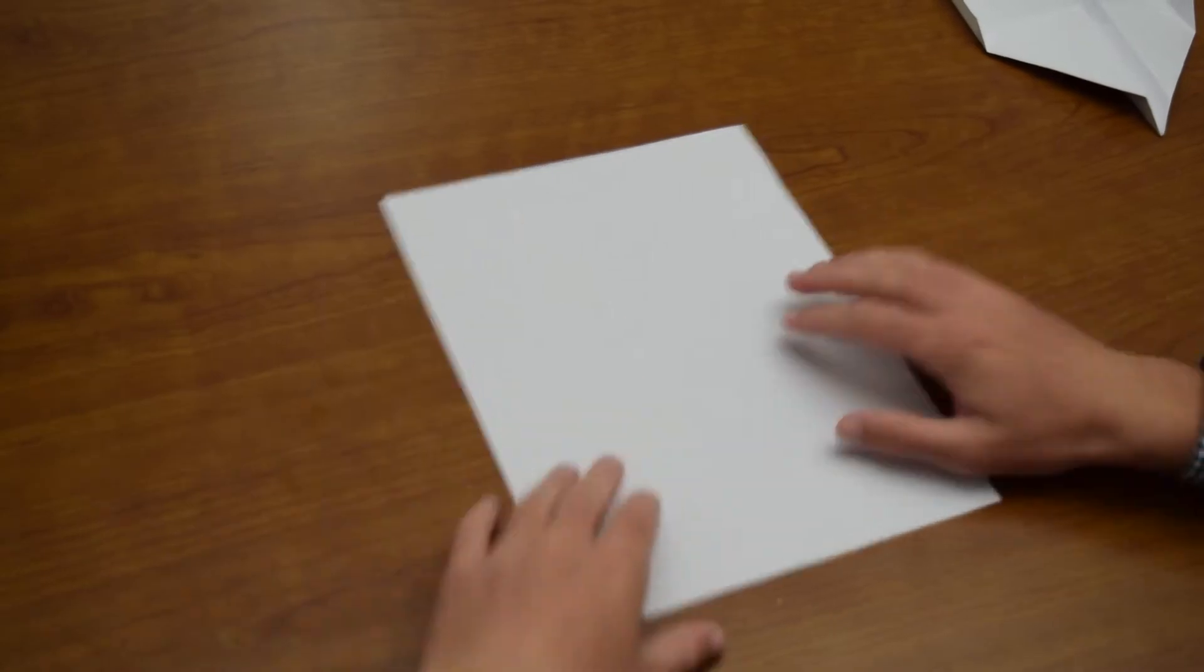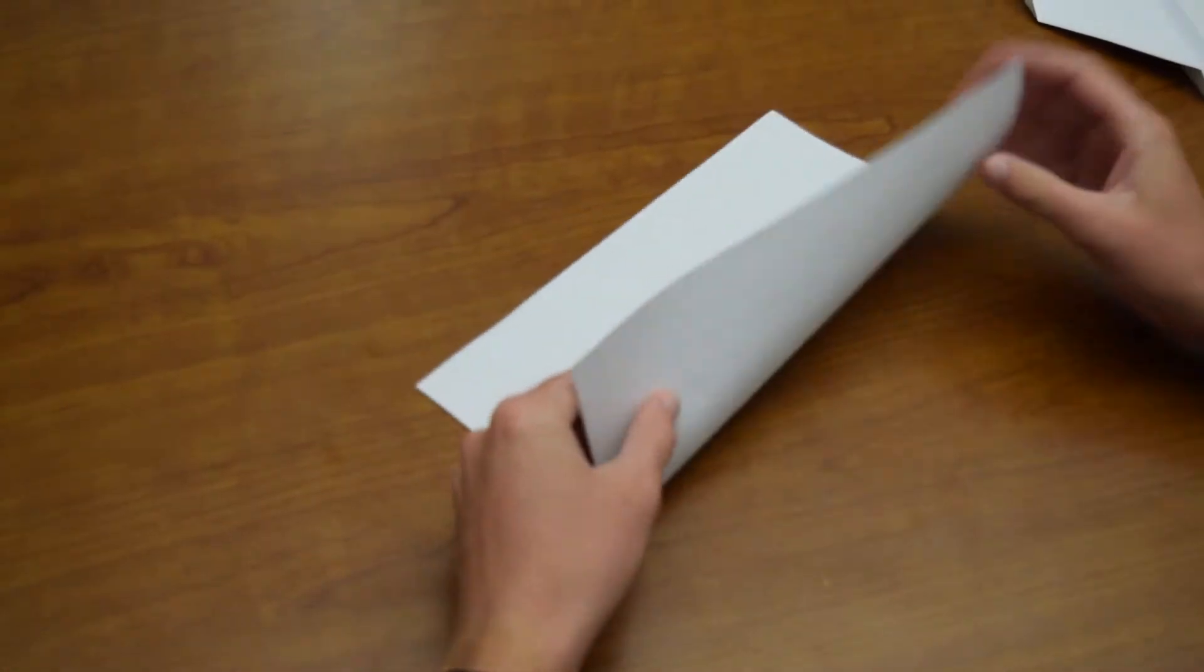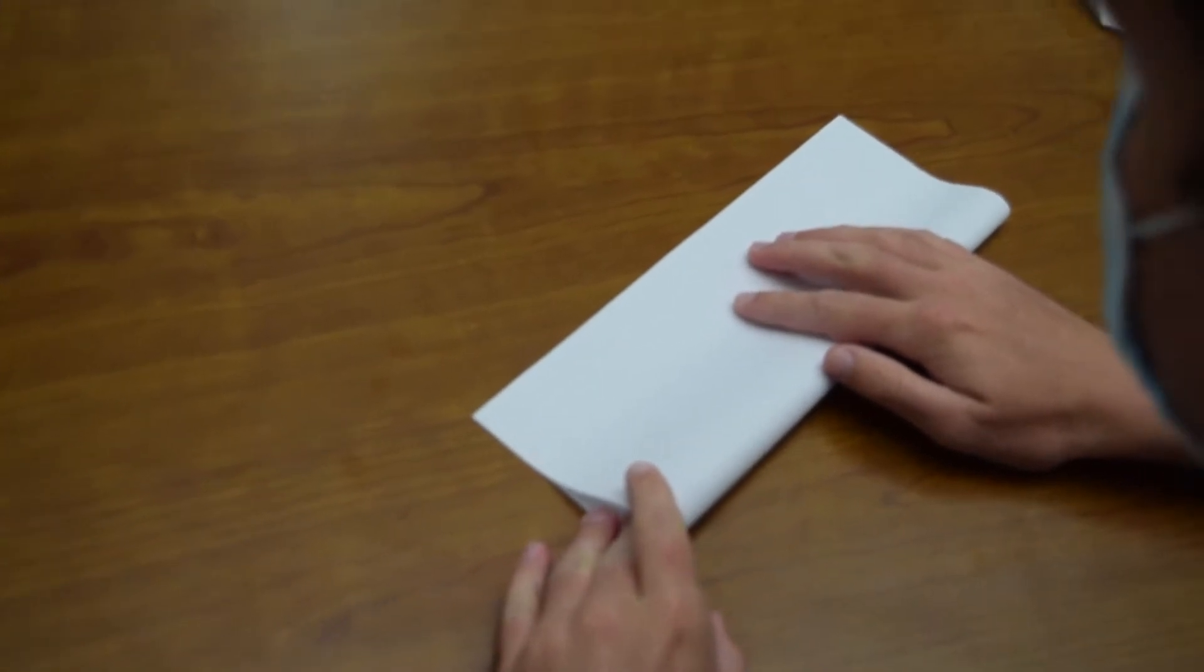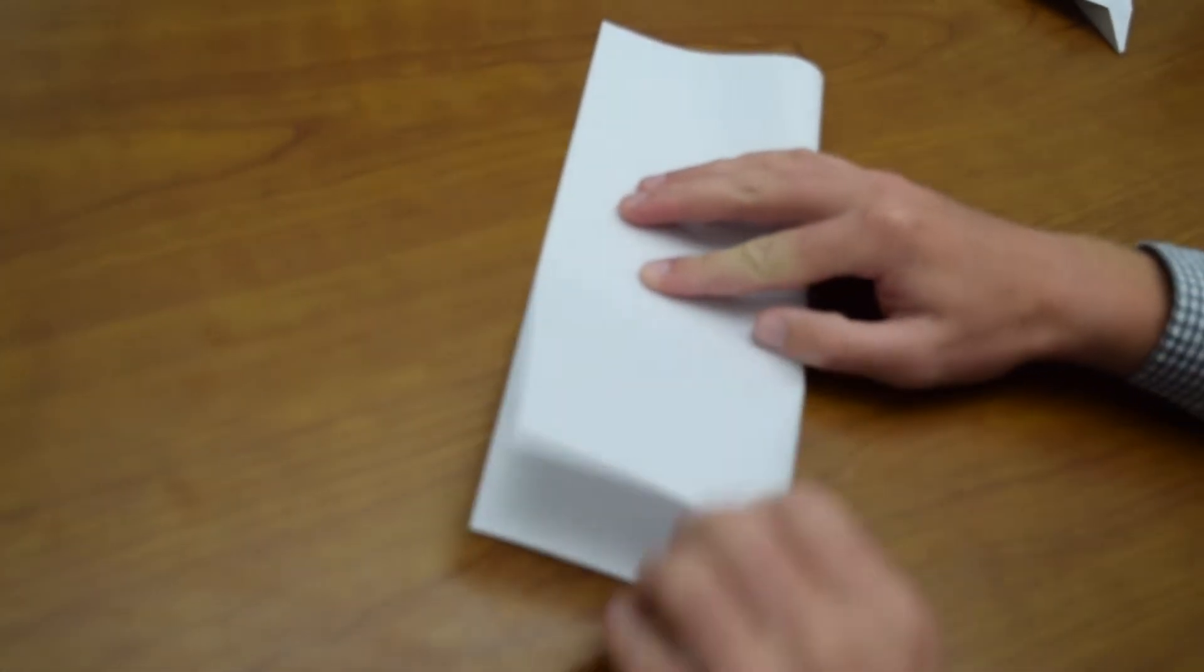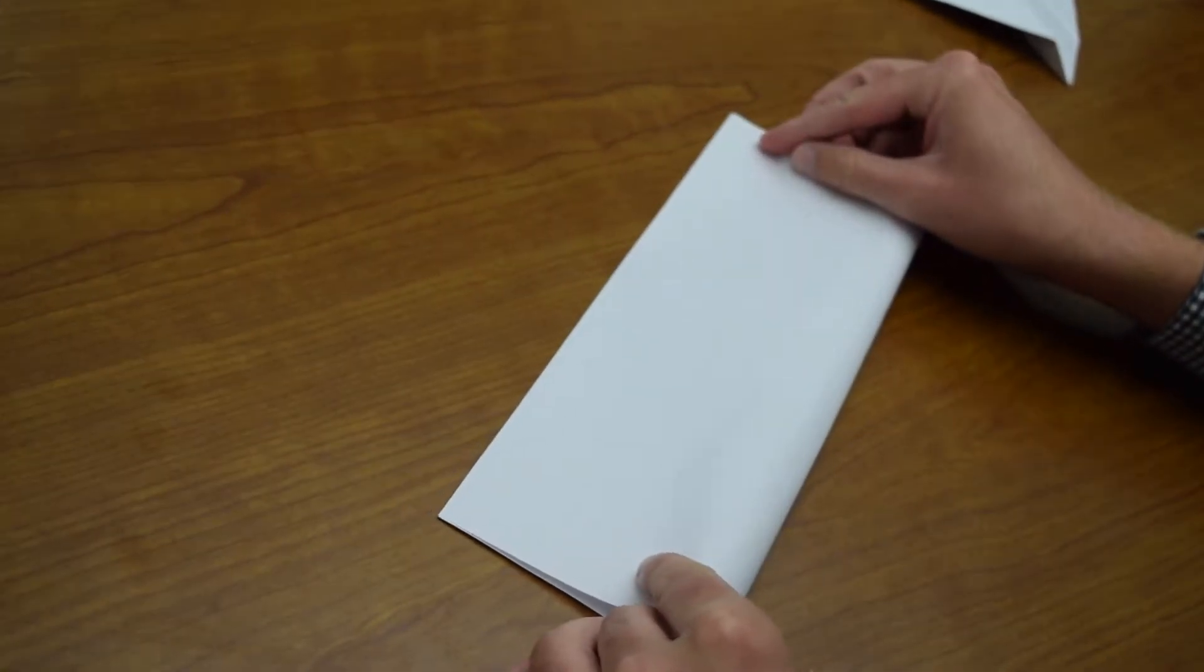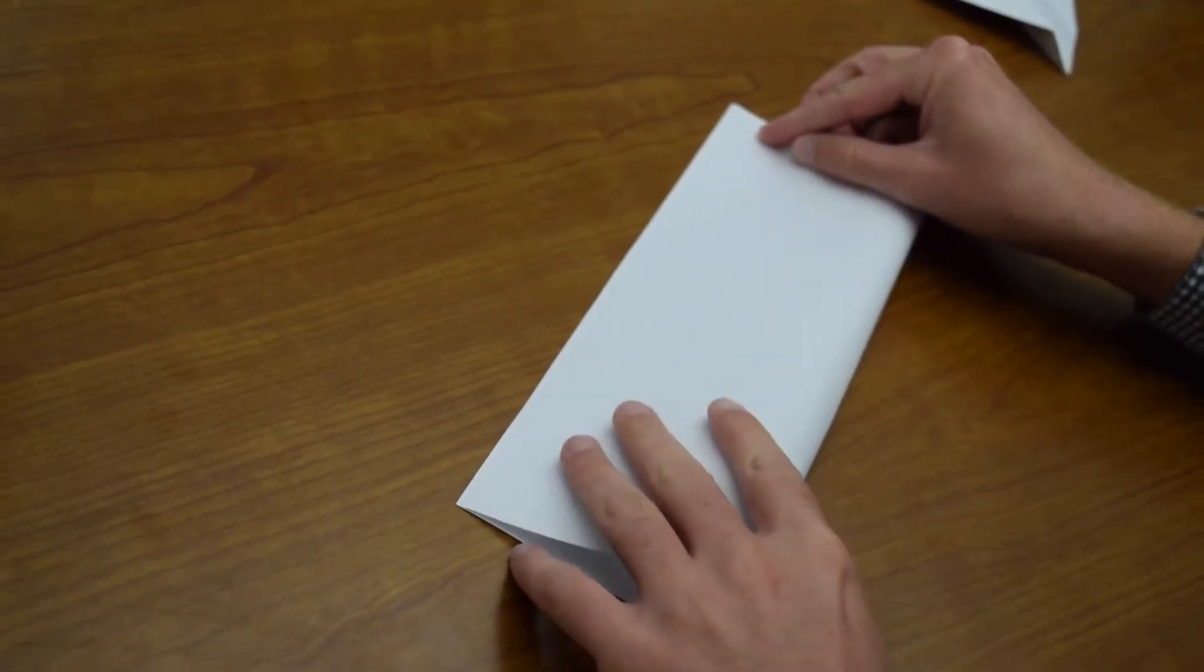Our very first step is very similar to most paper airplanes if you've built them before. We fold it hot dog style. When you're making paper airplanes it is totally okay to be a little bit of a perfectionist. So we're going to fold this and try to get the corners to line up as exactly as we possibly can.